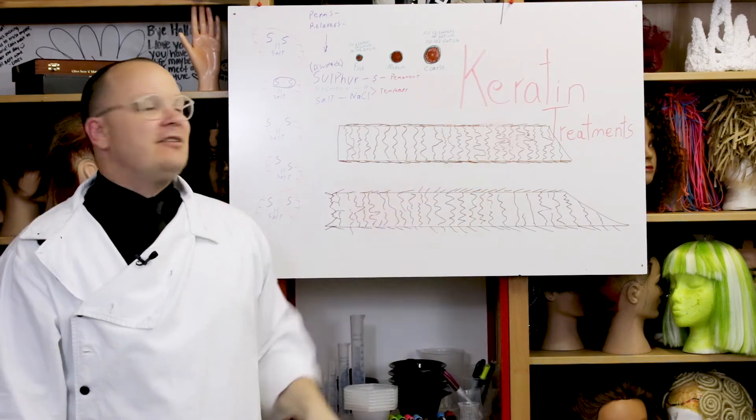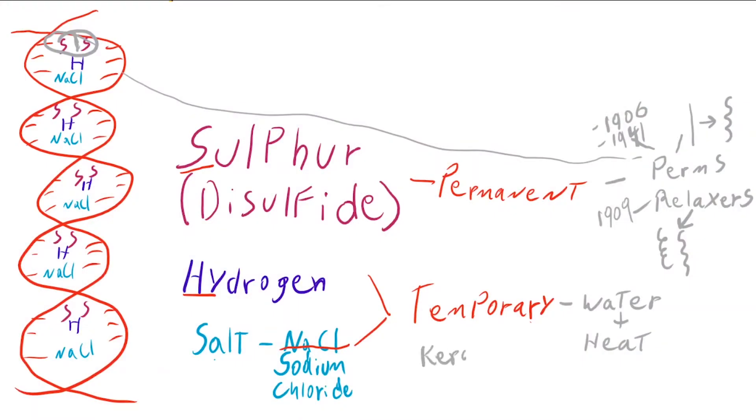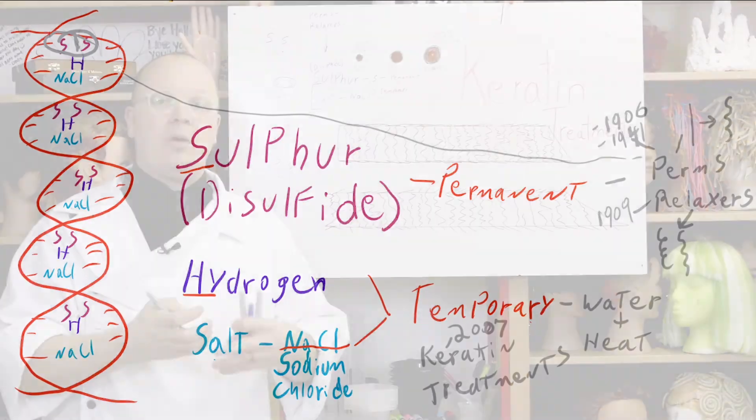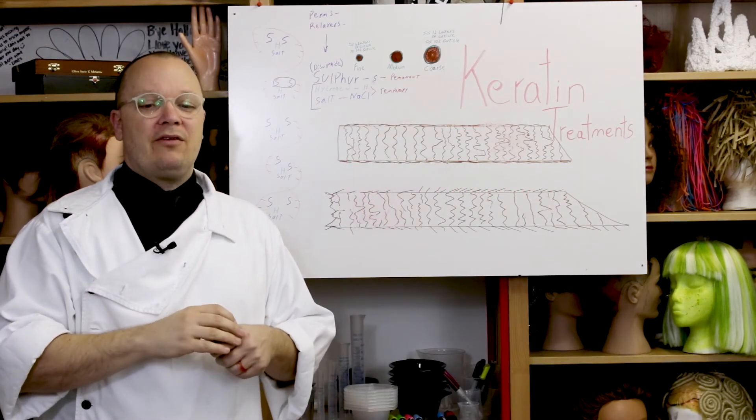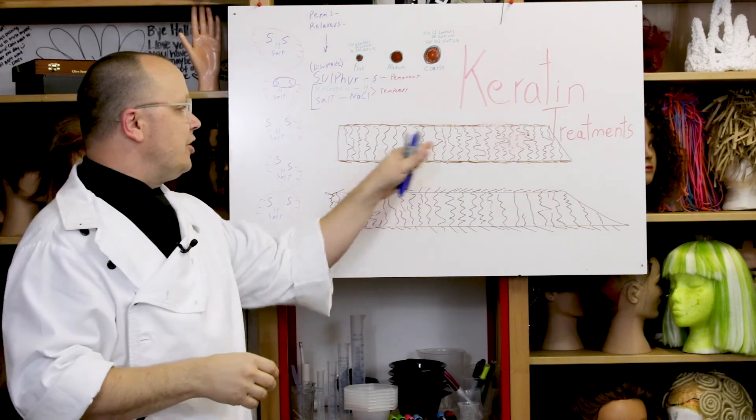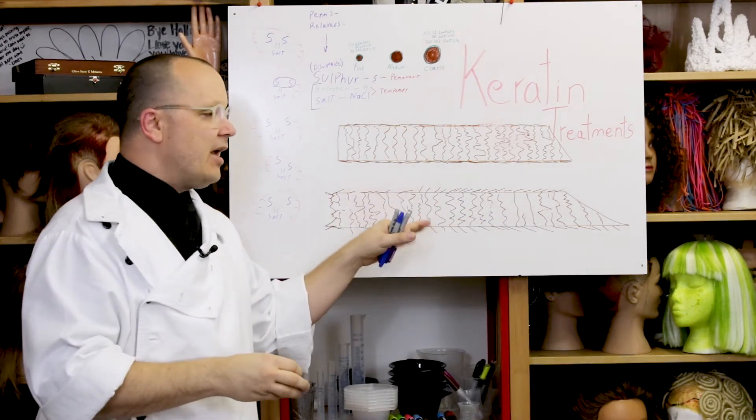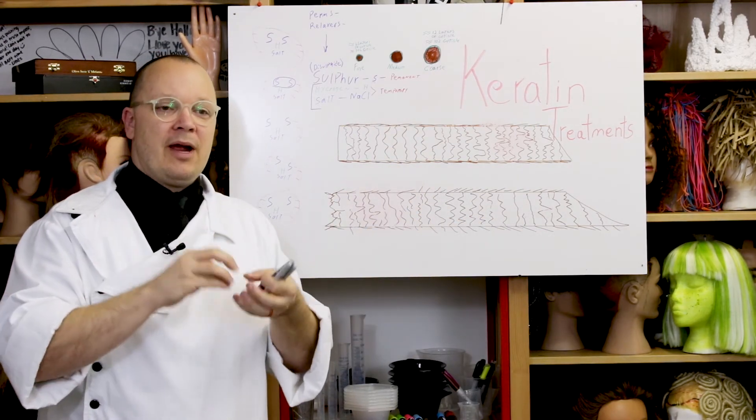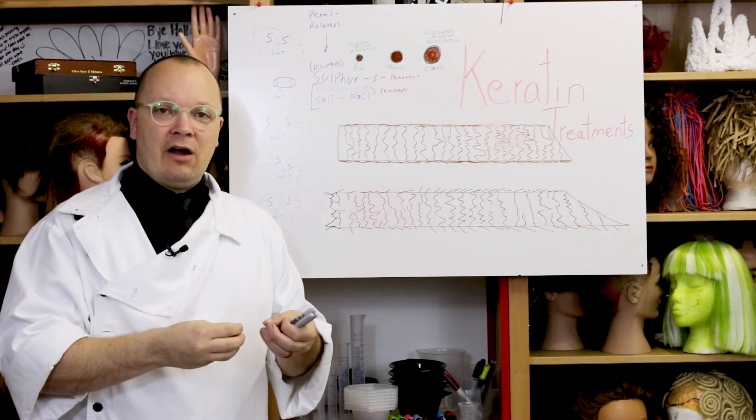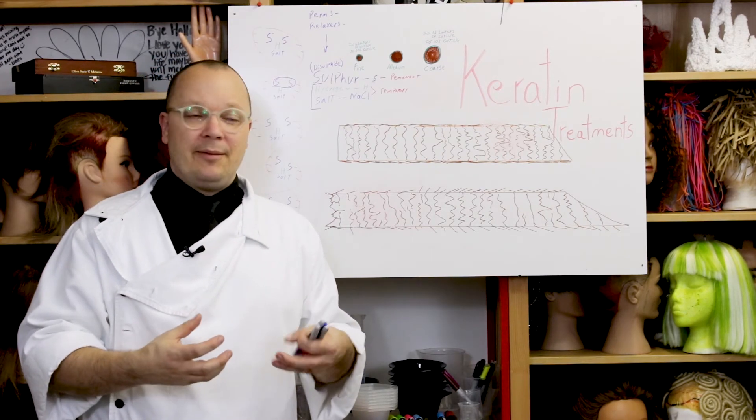The first keratin treatments hit the market around 2007. So about a hundred years later, we invented keratin treatments. Keratin treatments use different chemicals and they are going to bond with the hydrogen and the salt bond and make them more permanent. So that means we're essentially making a shell around the hair. We're smoothing it out. Yes, we are repairing and replacing some missing keratin in the hair from environmental or chemical damage.